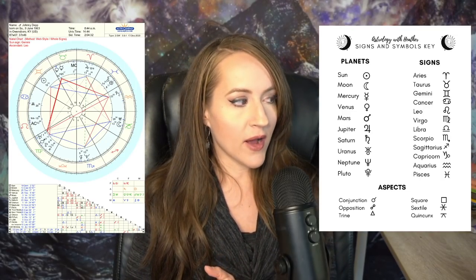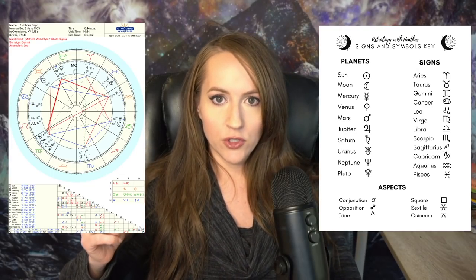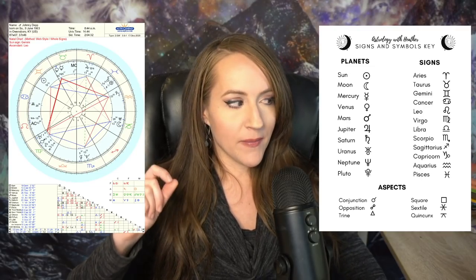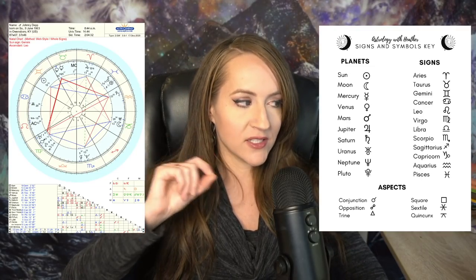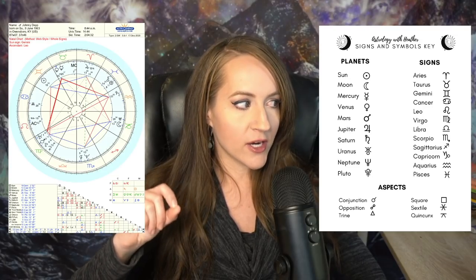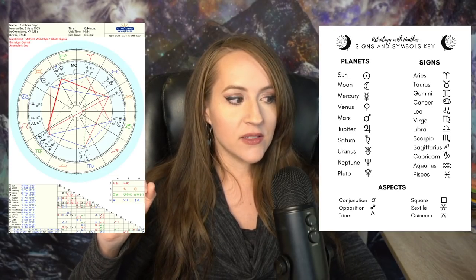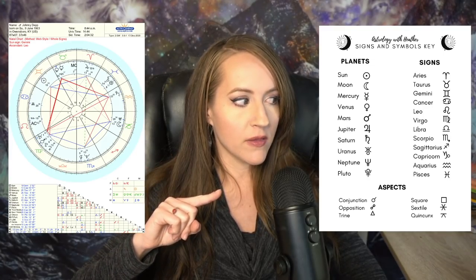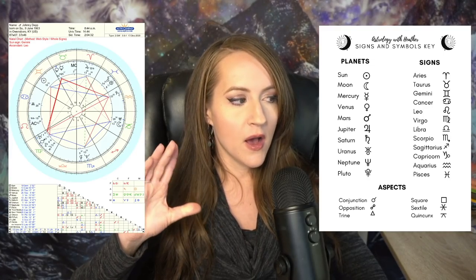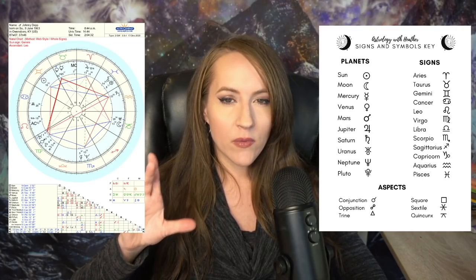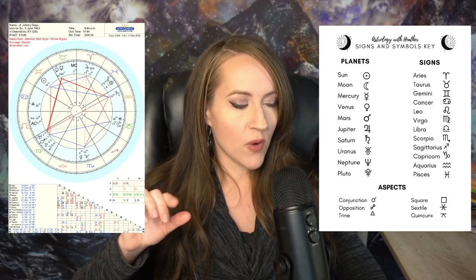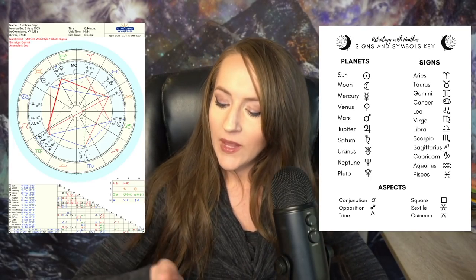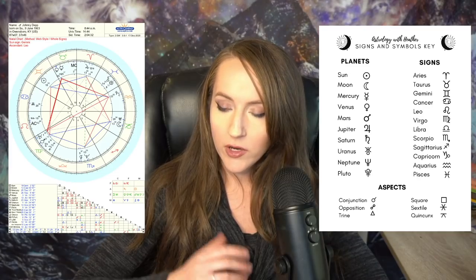Once you've identified your glyphs and aspects, I recommend writing down next to each of the aspects what it actually represents — conjunction, opposition, trine — so you have them annotated clearly. The aspects in the glyph key correspond to the aspect table. You don't necessarily have to worry about that right now, but that's how those aspects show up when they're not in a chart — they're represented by those symbols.